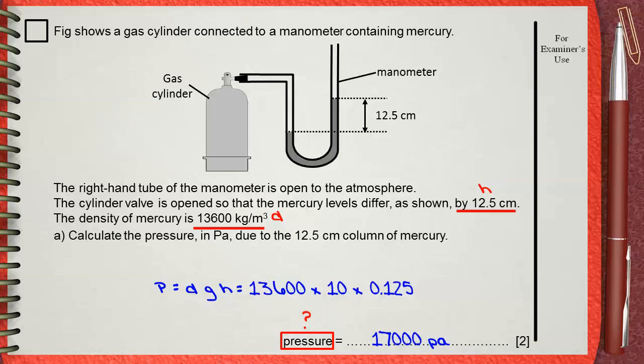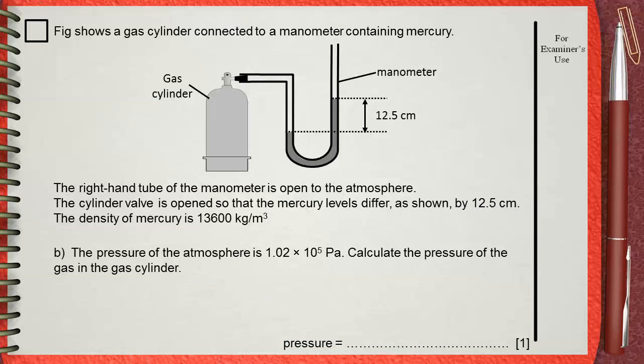Question B: The pressure of the atmosphere is 1.02 times 10 power 5 Pascals. Calculate the pressure of the gas in the gas cylinder.